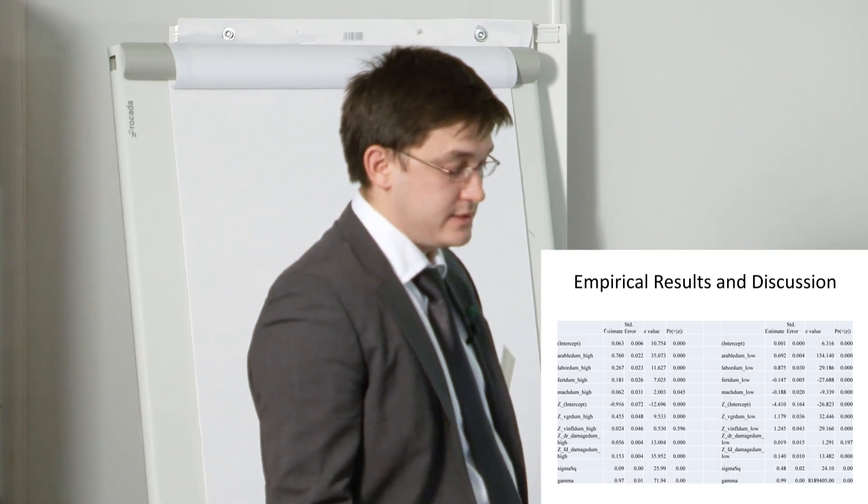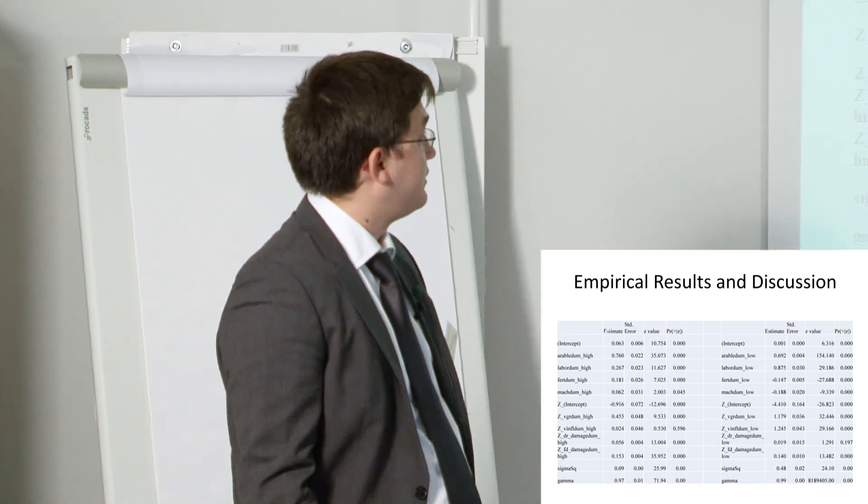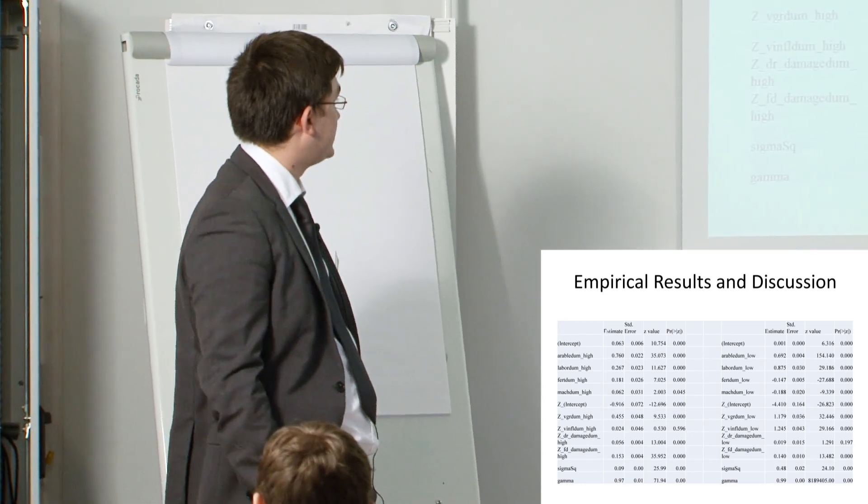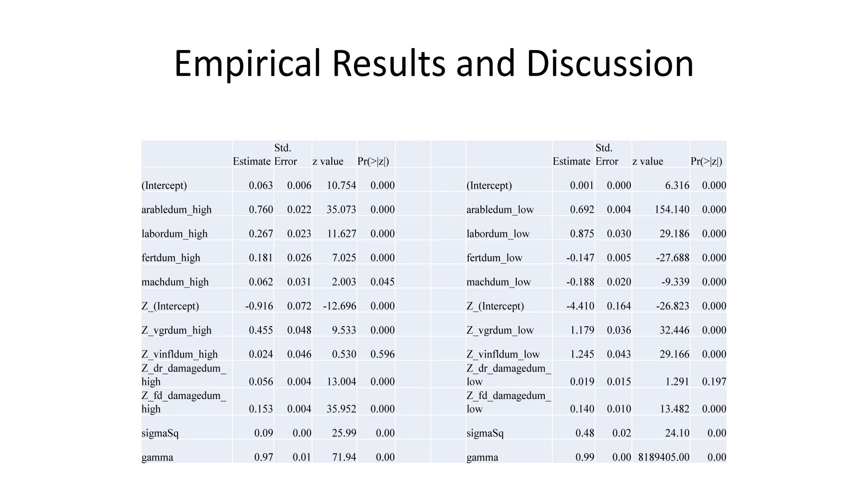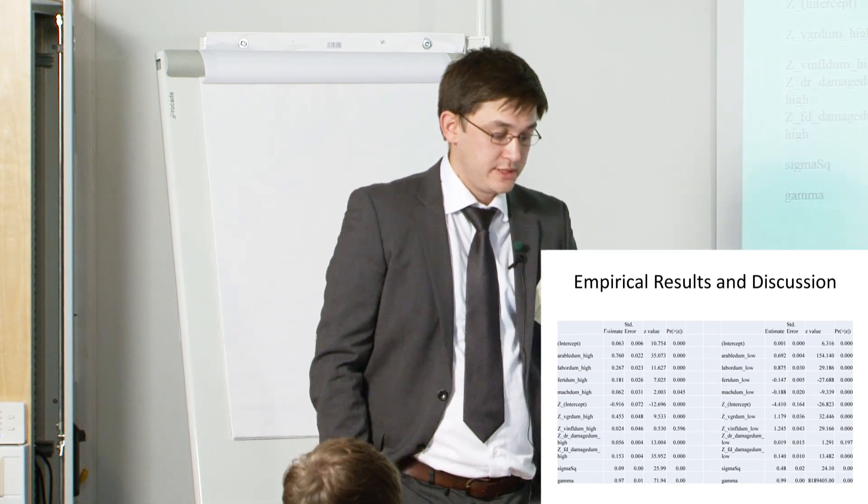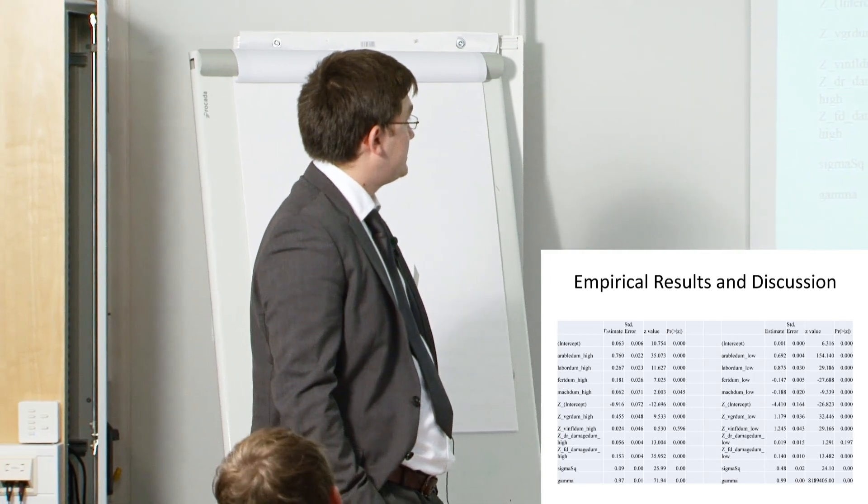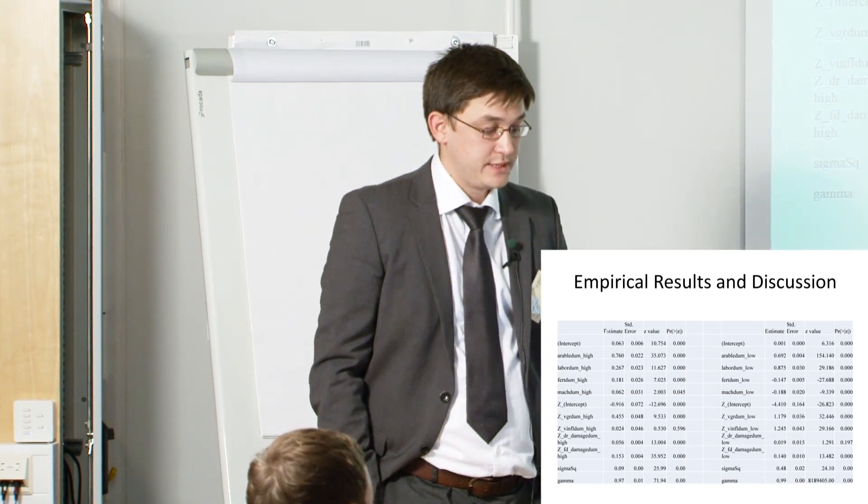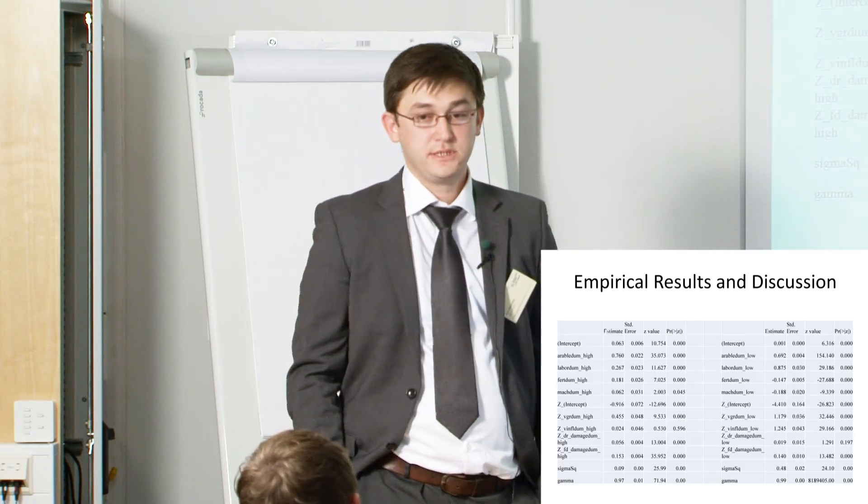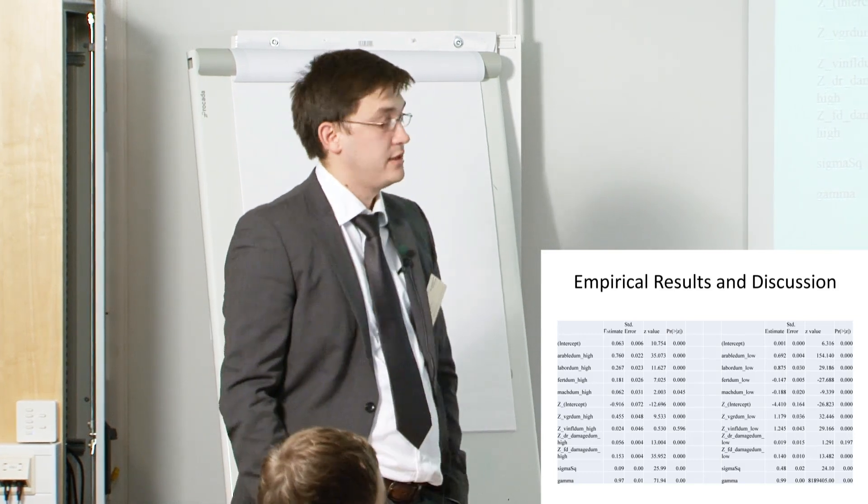As you saw in the previous slides, our dependent variable is negative technical efficiency. We have the sample for high income countries and for the low income countries. We find that all our variables are negatively related with technical efficiency. This basically means that when there is less financial crisis volatility, then technical efficiency improves. And when there is less climate change, our technical efficiency improves. These are the results for the moment.